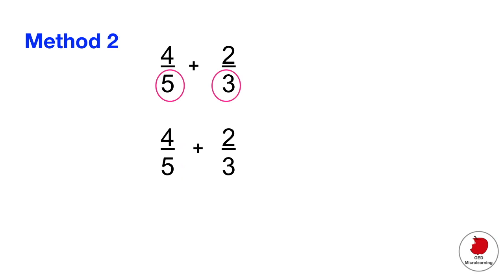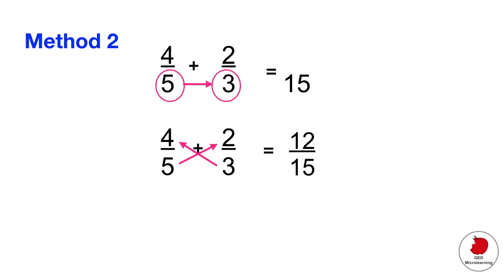That is method one. I'm going to show you a second method I like to call the bow method — a little hack to go faster. To find the common denominator, multiply the two denominators: 5 times 3 gives us 15. Then for the numerators, we go in a bow or pretzel shape: multiply the 3 from the second fraction by the 4 — that gives 12 over 15 — then multiply the 5 by the 2 — that gives 10 over 15. Add them: 22 over 15. Same answer. Try whichever method works best for you.